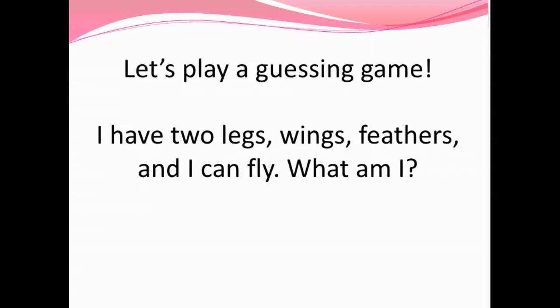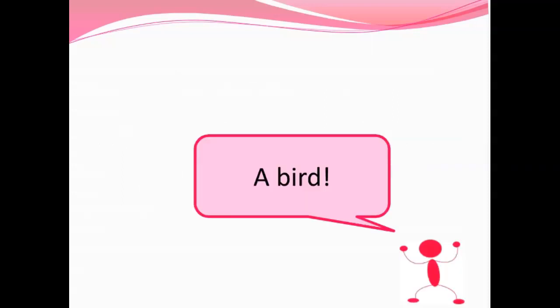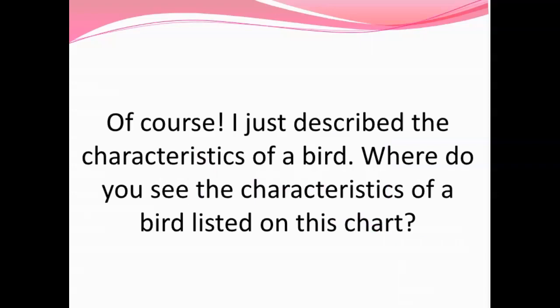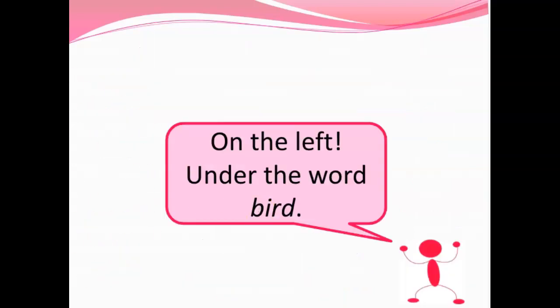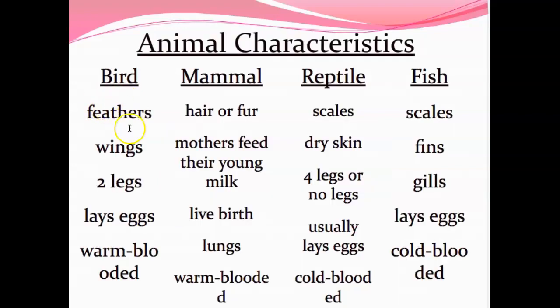Let's play a guessing game. I have two legs, wings, feathers, and I can fly — what am I? It is a bird. I just described the characteristics of a bird. Today we're going to be focusing a lot on characteristics, or things that tell about. The characteristics of birds are listed on our chart on the left-hand side under the word bird: feathers, wings, two legs, and warm-blooded.